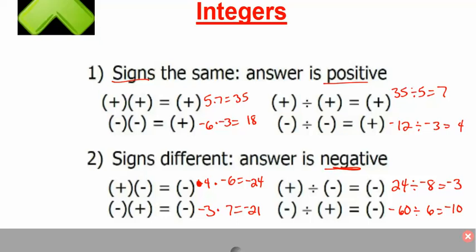On the back, I want you to write: number one, same sign — your answer is always positive. If you want to write any of the examples, go for it, or if you want to write the symbols, feel free. And then number two, if the signs are different, your answer will be negative. Write those two things down. If you want to write the examples, go for it.